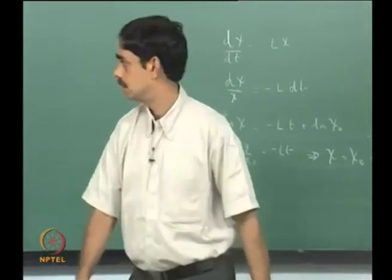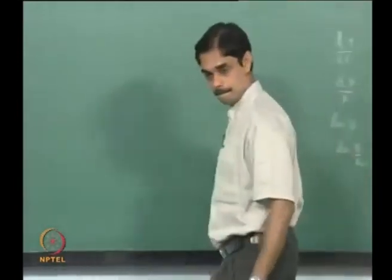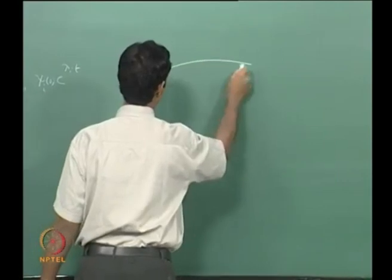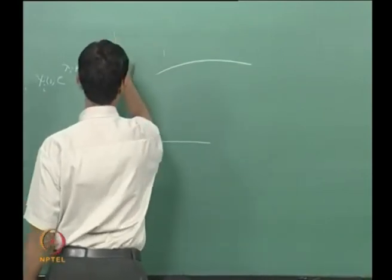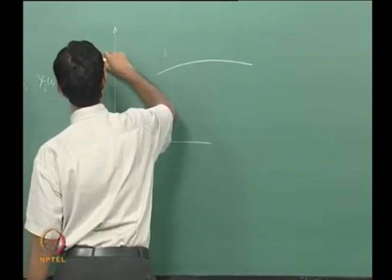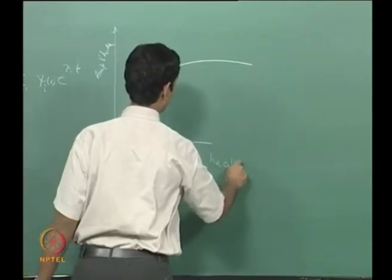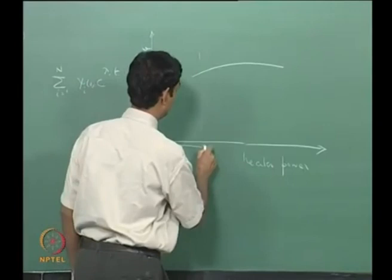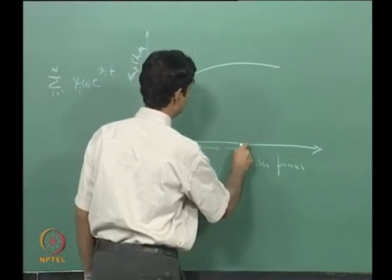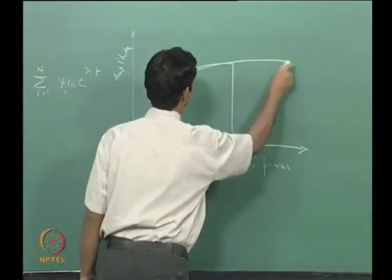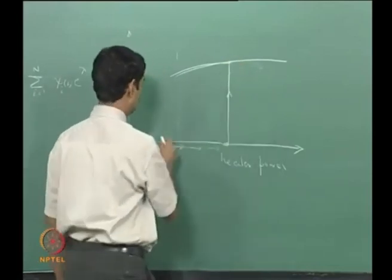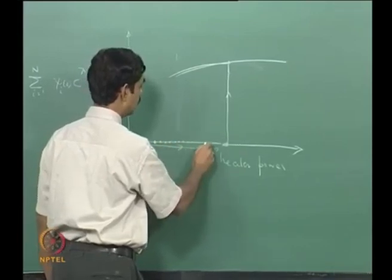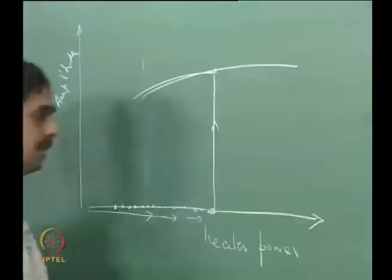Let us say this is amplitude versus heater power, not putting any units. You come here, increasing the heater power, and at some point you get to instability. These are stable fixed points — you can be here. I am coming this way but the system is still staying there. Here also there is a solution.